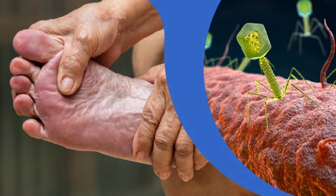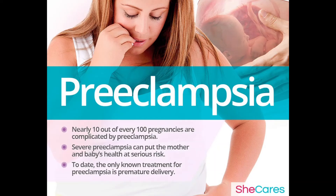Untreated gestational diabetes can lead to a baby's death either before or shortly after birth. Complications in the mother include preeclampsia — symptoms include high blood pressure, too much protein in the urine, and swelling in the legs and feet. If you had gestational diabetes in one pregnancy, you're more likely to have it again with the next pregnancy.